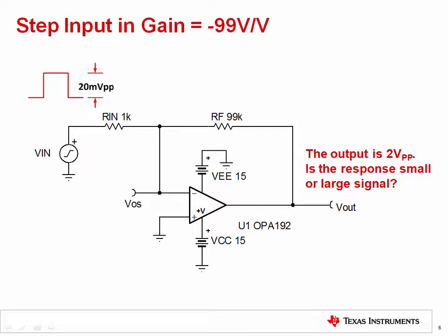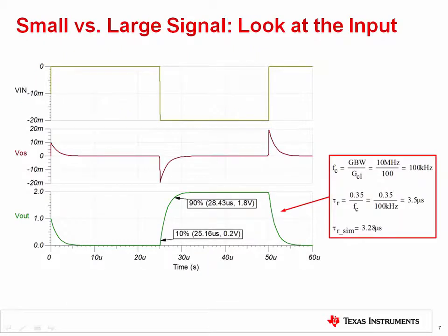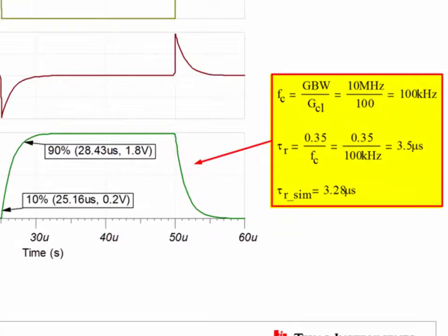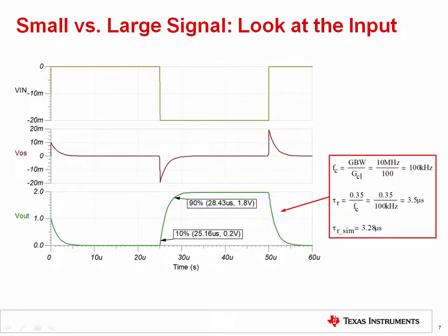Here we show an inverting amplifier circuit with a gain of minus 99 volts per volt. The input is a small signal step of 20 millivolts peak-to-peak. Based on the gain, the output should be approximately 2 volts peak-to-peak. The simulated output shows exponential rise and fall, indicating a small signal response. Using the small signal rise time formula, the calculated rise time of 3.5 microseconds is very close to the simulated rise time of 3.28 microseconds. Thus, the amplitude of the input signal determines the behavior of the op-amp — not the output signal amplitude.